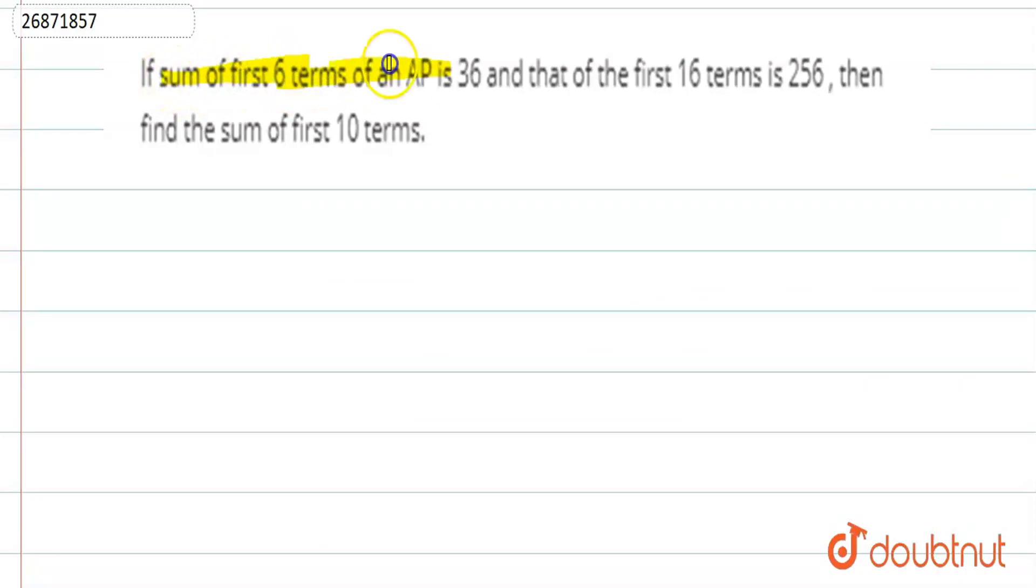In this question, I have given the sum of 6 terms of an AP is 36, and that of 16 terms is 256. We have to find the sum of first 10 terms. That means, we know that S6 is 36, and S16 is 256. Now, what is our formula? n by 2, 2a plus n minus 1 times d.